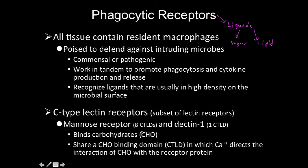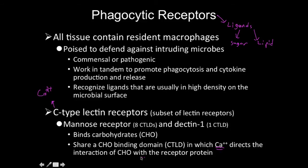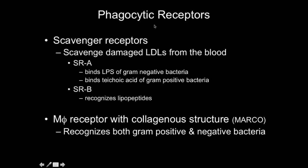The 'C' in C-type lectin refers to the use of a calcium ion (Ca²⁺) as a cofactor to facilitate binding between the ligand and the receptor. The mannose receptor is a very large receptor with eight of these binding domains. It also has R-type lectin domains — one of which is related to ricin binding — and Dectin-1, which only has one C-type lectin binding domain. The key point is that calcium ions act as a cofactor to direct the interaction.